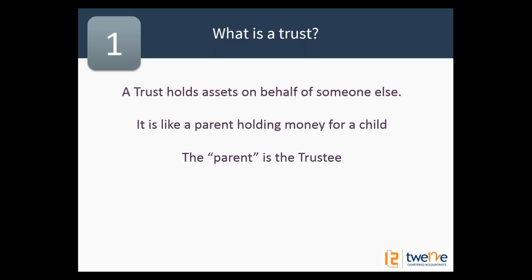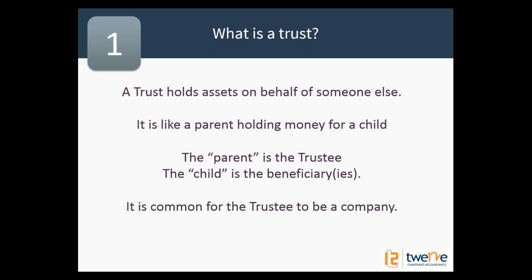In that analogy, the parent is the trustee and the child is the beneficiary. It's very common for the trustee to be a company — mainly for better asset protection, and secondly because companies don't die. The trustee is the important part — the entity or person holding the money. There are a few issues that happen when a person actually dies, where companies don't have that problem.